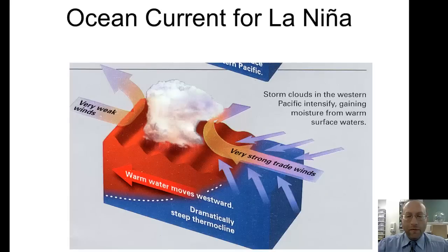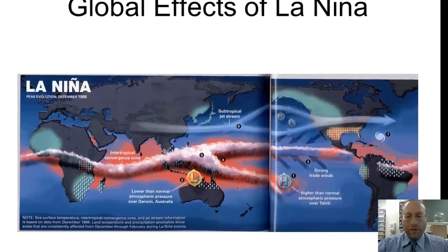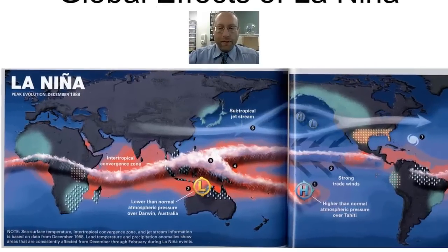A La Niña year will sometimes follow an El Niño year. It's just the swing of the pendulum in the other direction, going further than a normal year. Trade winds go in the regular direction but much more intensely than a normal year, so we'll see a more intense normal year. What we saw in an El Niño year, it's the opposite.